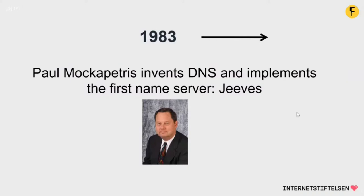Unlike the previous central registry, the domain name system is automated and distributed across many computers and servers on the network, making it both scalable, more resilient, and capable of operating without a central organization. Mockapetris himself has said that he imagined it could work with up to 30 million addresses. Today there are over 330 million domains, and the technology still works in almost the same way as when it started.